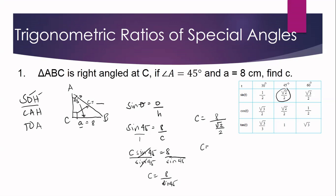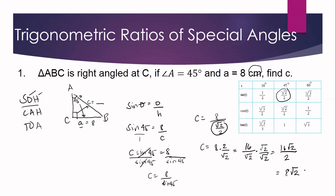To solve the division by a fraction, we multiply by the reciprocal of the divisor, which is 2 over square root of 2. Numerator to numerator gives 16, denominator to denominator gives square root of 2. We rationalize by multiplying by square root of 2 over square root of 2, giving 16 square root of 2 over 2. Simplifying, C equals 8 square root of 2 centimeters.